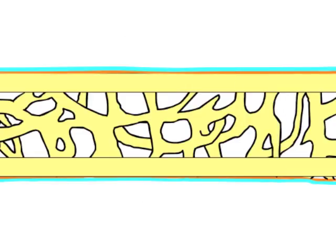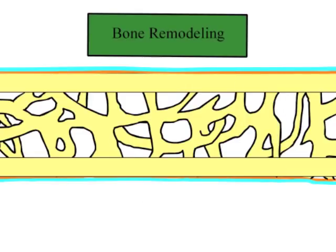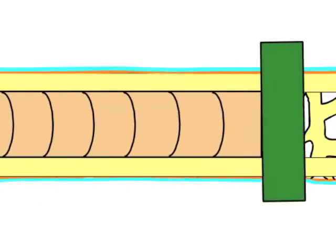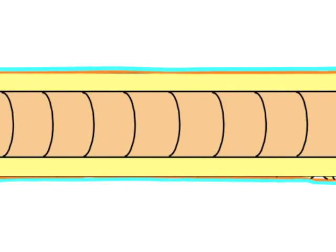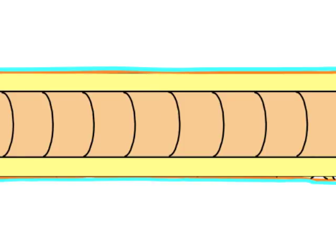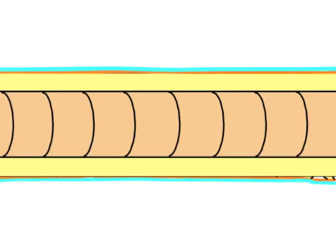Through a different process of bone remodeling, the middle layer of spongy bone can be removed, creating a medullary cavity. The final structure of completed bones includes the outermost layer of connective tissue, known as the periosteum. The innermost portion of the periosteum is composed of fibrous connective tissue.